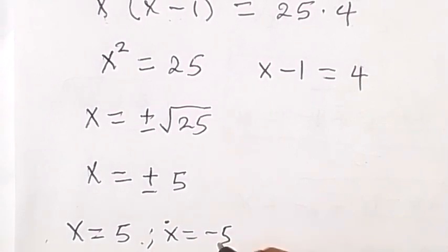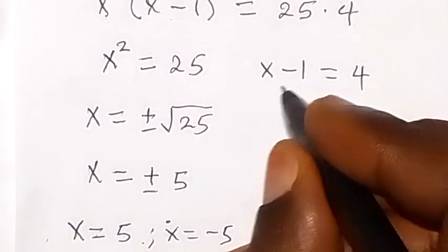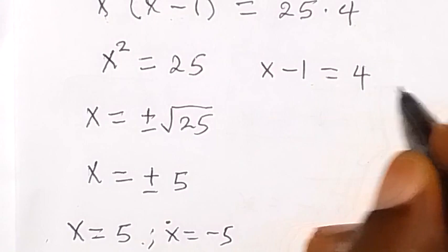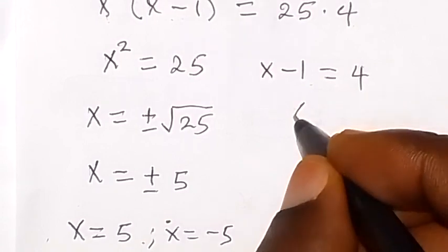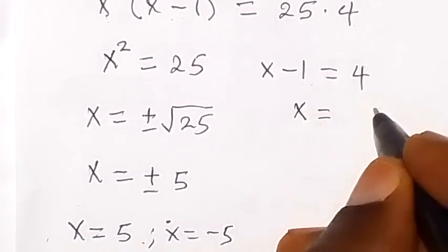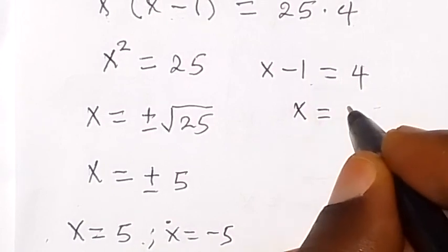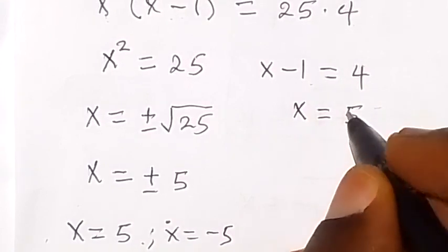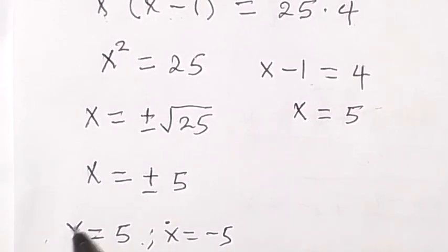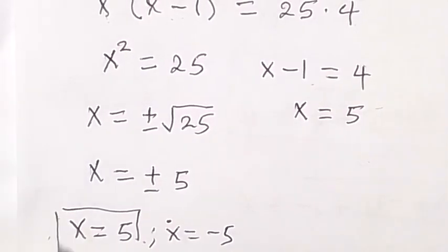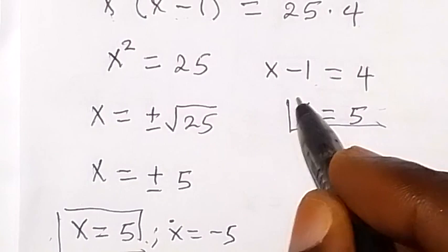That is x equals to 5 or we have x equals to minus 5. Then from this side, as x minus 1 equals to 4, we can say that x equals to 4 plus 1 when we take minus 1 to that side, that's x equals to 5.